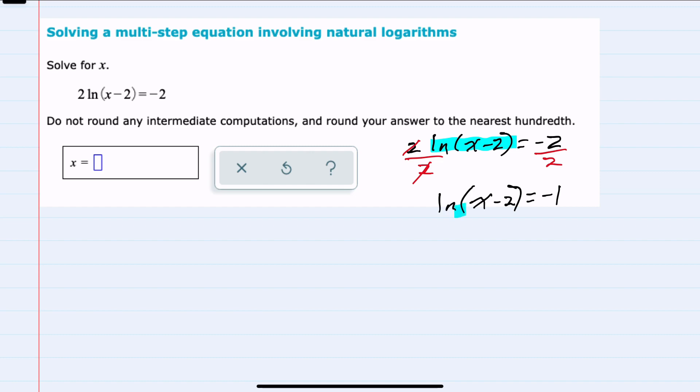So our base is e. Our exponent will be negative 1. So e to the negative 1 equals what we are taking the natural log of, which is the x minus 2.